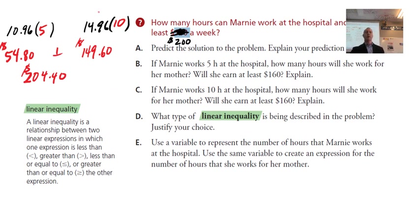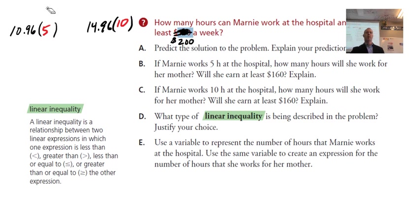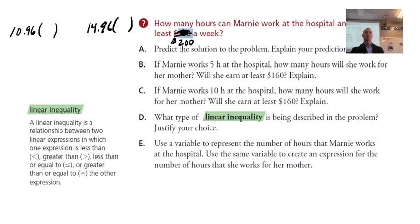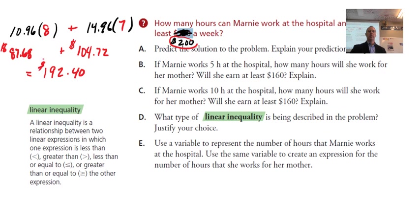But there are other combinations as well. You have to keep in mind that Marnie likes working at the hospital more. So could she up those hours? Because it's a little bit more enjoyable work. And down the hours that pay more, but still make $200. Let's do some other combinations. What if we did something a little bit closer to an even number? Like 7 and 8 or something. Would that work? If we did 8 here and 7 here. Go ahead and do that calculation and find out what the total would be. Would she make the $200 a week if we did this? If we add those two up, we get actually $192.40. So this wouldn't quite help her to meet her goal.